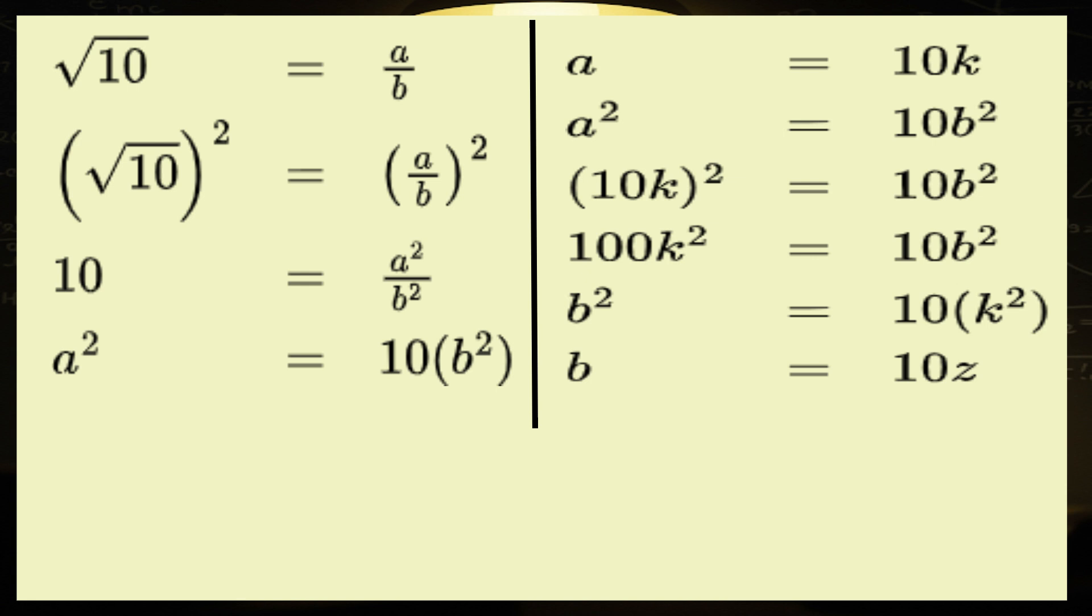Remember when we started, we assumed that a and b had no common factors. But now, we've just discovered that both a and b are divisible by 10. Surprise twist folks, they've got a common factor after all. Plot twist of the century.